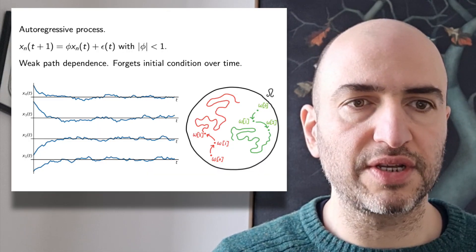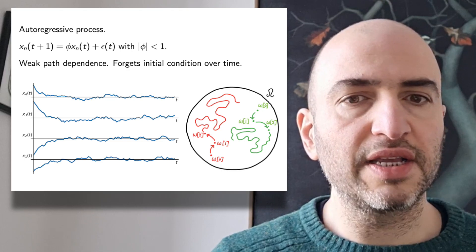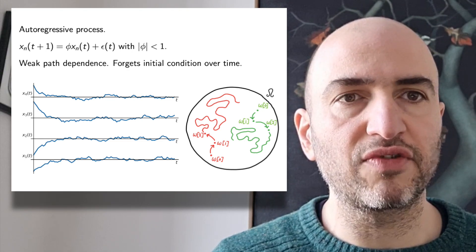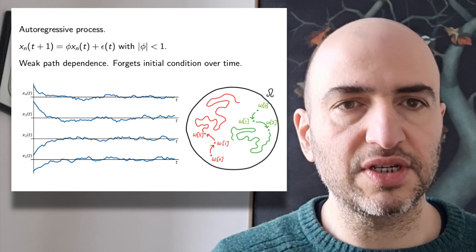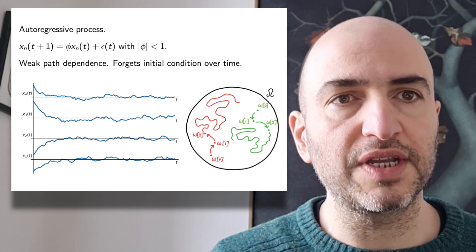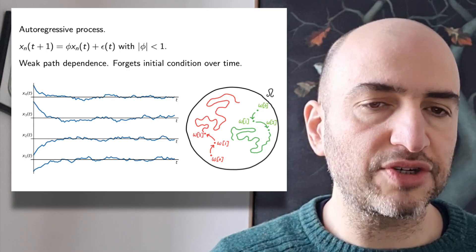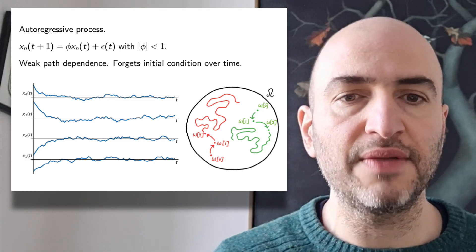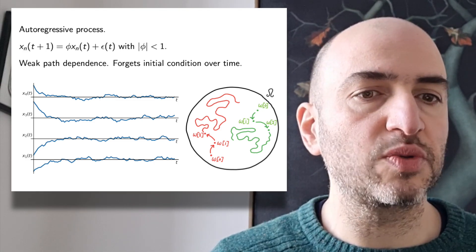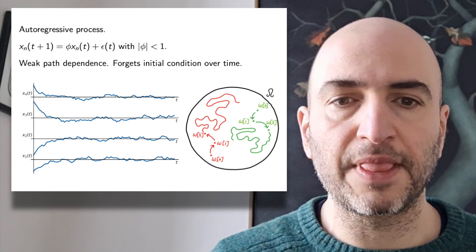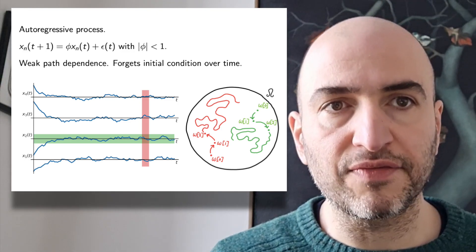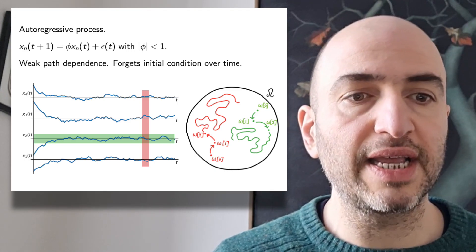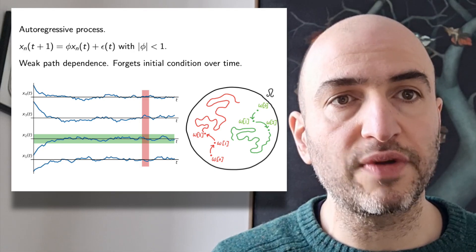The next example is a little more subtle. It's an auto-regressive or mean-reverting process, where the observation at time t plus 1 is some fraction of the observation at time t plus the realisation of a random variable. This fraction has magnitude less than 1, which means we have weak path dependence. As we proceed along a trajectory, we eventually forget about the initial condition. Here are some trajectories on the screen, where we displace away from the mean initially, and allow the process to run, and eventually we get a process which executes some motion around the mean. Clearly, if we average over a long trajectory here, it will be equivalent to taking an average over many different trajectories, provided the latter average is taken a sufficient distance away from the initial condition, such that we've forgotten about it.